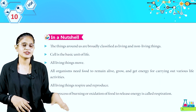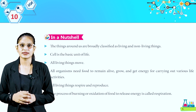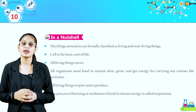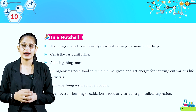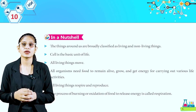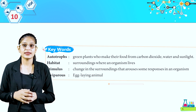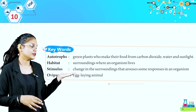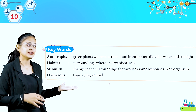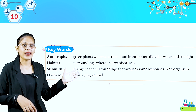What do we learn in this chapter? The things around us are broadly classified as living and non-living things. Cell is the basic unit of life. All living things move. All organisms need food to remain alive, grow and get energy for various life activities. All living things respire and reproduce. The process of oxidation of food to release energy is called respiration. Keywords: Autotrophs — green plants that make their food from carbon dioxide, water and sunlight. Habitat — surroundings where an organism lives. Stimulus — a change in surroundings that arouses a response in an organism. Oviparous — egg-laying animal. Thank you, students; we will meet again in the next chapter.